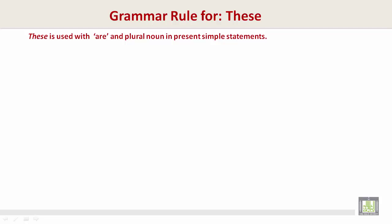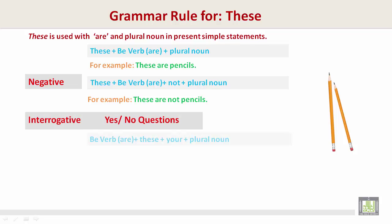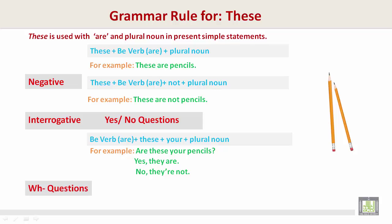Grammar rule for 'these': 'These' is used with 'are' and a plural noun in present simple statements. Structure: these + are + plural noun. For example: 'These are pencils.' Negative: these + are + not + plural noun. For example: 'These are not pencils.' Yes/No questions: are + these + your + plural noun. For example: 'Are these your pencils?' — Yes, they are. No, they're not. WH-question: what + are + these? — 'What are these?'